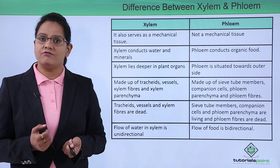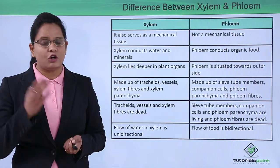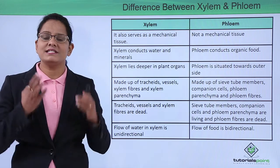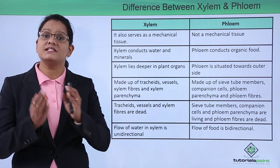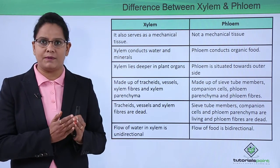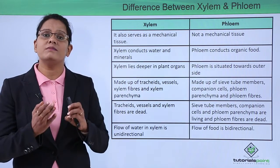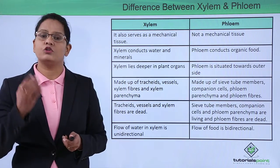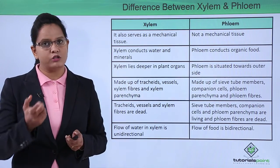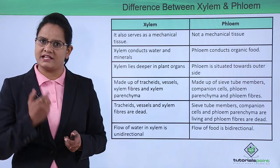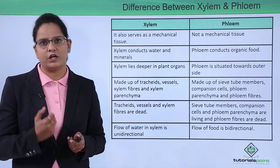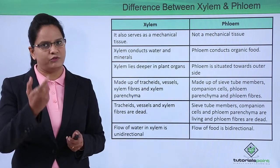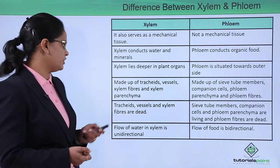Regarding location: xylem is present in the deeper parts inside the plant, while phloem is present on the outer side. So there is also a difference in the location of both tissues.